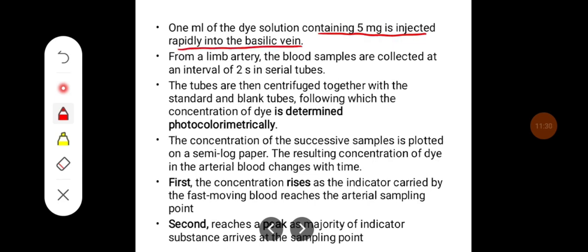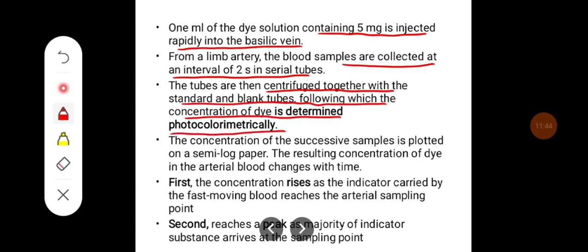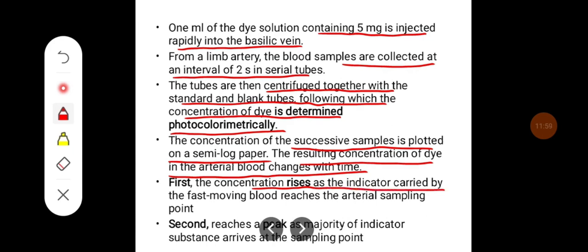One ml of dye solution containing 5 mg is injected rapidly into the basilic vein. From the limb artery, blood samples are collected at intervals of 2 seconds in serial tubes. The tubes are then centrifuged together with the standard blank tubes, following which the concentration of the dye is determined photocolorimetrically. The concentration of successive samples is plotted on semi-log paper. The resulting concentration of the dye in arterial blood changes with time — first, the concentration rises as the indicator carried by fast-moving blood reaches the arterial sampling point.